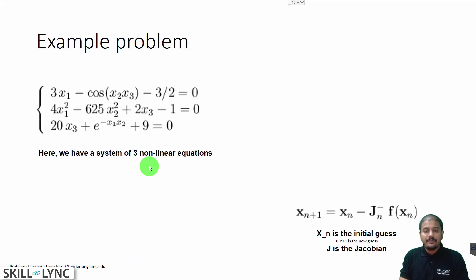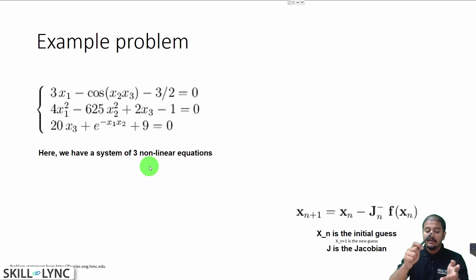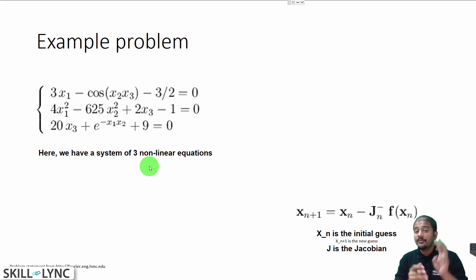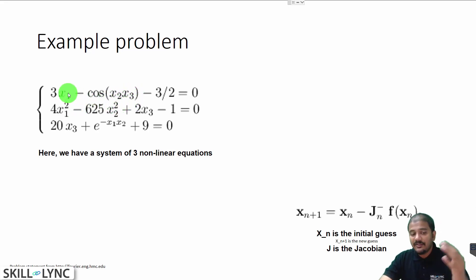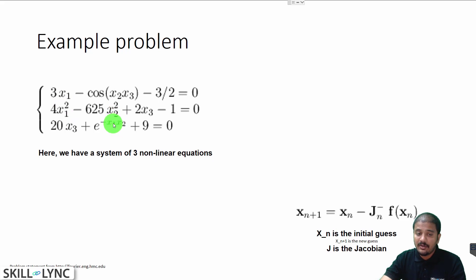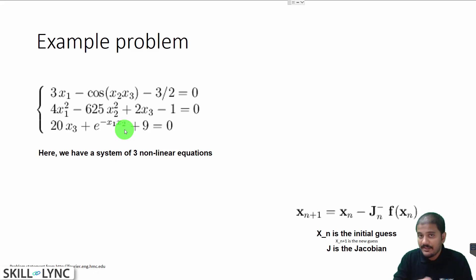Before solving the entire ODE system, let us take up a simpler problem. We know how to solve ODEs and single-variable Newton-Raphson, but we have never done Newton-Raphson for a multivariate system, and that is what we are going to do now. On screen is a system of three nonlinear equations. They are called nonlinear because the variables x1, x2, x3 are multiplied with each other — for example, x1 squared, x2 squared, and x1 times x2. I have already written a Python code to solve this.